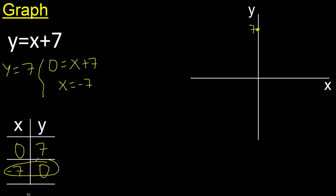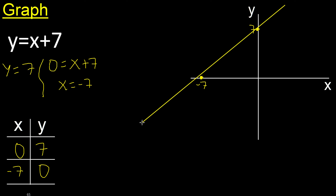x minus 7, positive, negative. Minus 7 is here. y is 0, y 0 is here. 0 minus 7, therefore the point is here. Finish. Thank you.